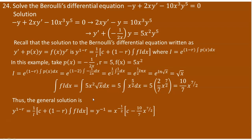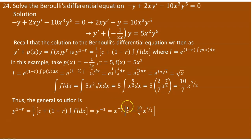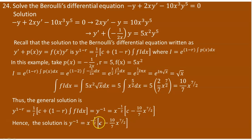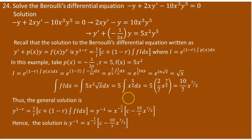Now substituting into the general solution: since r equals 2, the exponent 1 minus r equals minus 1, so y to the power of minus 1 equals 1 over I times c plus (1 minus 2) times the integral of f·I. With I equal to x to the power of 1/2, the factor 1 over I gives x to the power of minus 1/2. The term (1 minus 2) is negative, so the solution is y to the power of minus 1 equals x to the power of minus 1/2 times (c minus 10/7 x to the power of 7/2). Since y to the power of minus 1 is 1 over y, we can write y as the reciprocal of this expression.